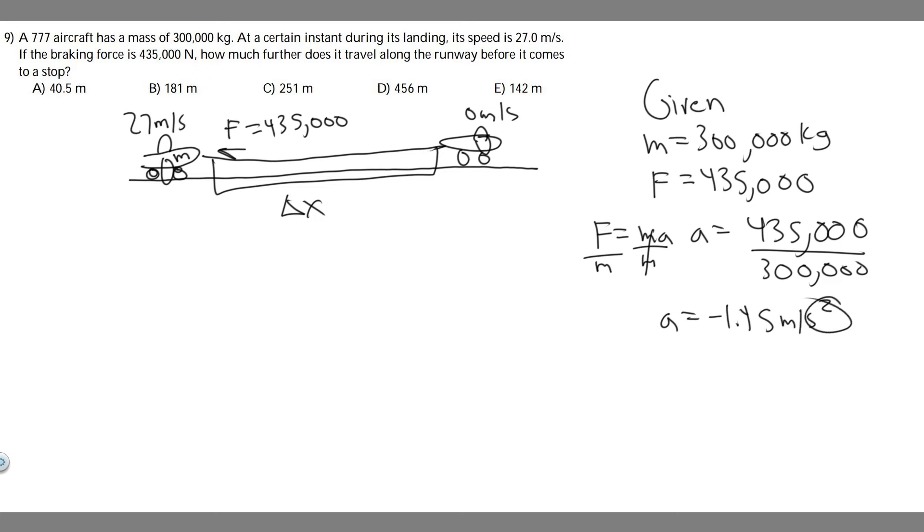And now we can use one of the kinematic equations to solve. So let's just write down the other variables we have. We have the initial velocity is 27, that's the beginning of our interval. We have the final velocity, which is 0 meters per second. And we're solving for delta x. So we're going to need an equation with all these. And so the equation we're going to use is this one: v squared equals v sub 0 squared plus 2a times delta x. So we need to just plug in and solve now.